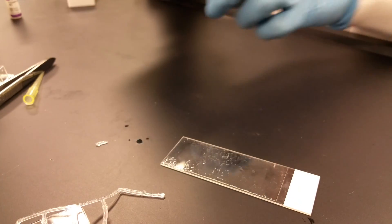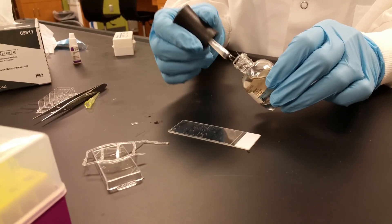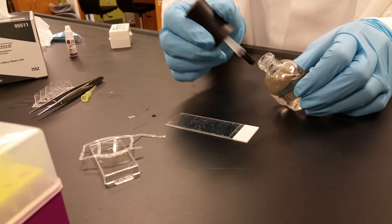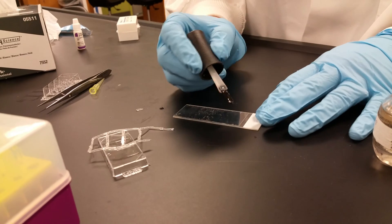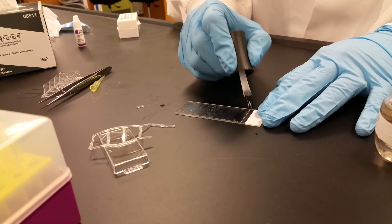The very last step is to seal the coverslip onto the slide. You do that with nail polish. You just need a tiny amount of nail polish, so wipe off the edge of the brush on the mouth of the nail polish so you don't get big dribbles, and then just make a small line right on the edge of the coverslip.